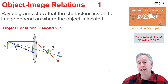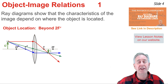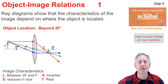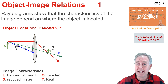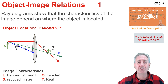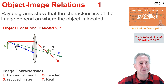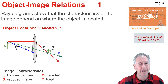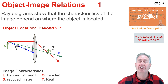Here we see a ray diagram for the case of an object located more than two focal lengths from the lens — we say the object location is beyond 2F. The object is represented by a green right-side-up arrow and the image is a green upside-down arrow. The image is located between the focal length and the 2F point, it's inverted, and reduced in size. The refracted rays are converging after passing through the lens, which means it's a real image. If the refracted rays diverged after the lens, you'd have a virtual image.